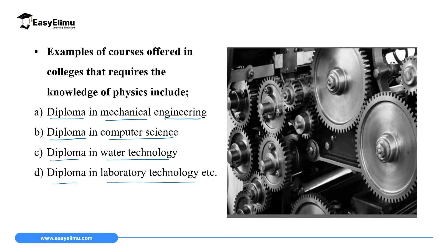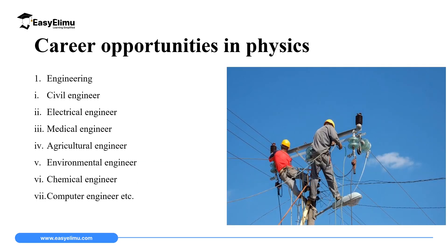There are many other courses that require the knowledge of physics. I want you to make a list of about 10 courses offered at college level — diplomas — and 10 degree courses offered at university level, apart from the ones we have discussed in this video. After pursuing those different courses at university level and at college level, one can join a career or profession in different fields.